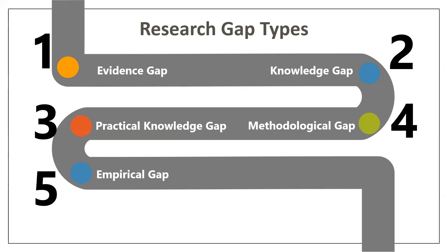The next one is empirical gaps. Here, the research findings or their implementations need to be evaluated empirically and have to be verified. We might have got results in the form of images or graphs, but we have to evaluate them. While evaluating those results, there might be a gap that has arisen, and this gap can be called an empirical gap due to its empirical nature.